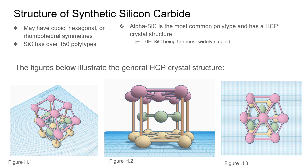Structure of synthetic silicon carbide: synthetic silicon carbide may come in cubic, hexagonal, or rhombohedral symmetries and has over 150 polytypes. Alpha silicon carbide is the most common polytype and it has the hexagonal close-packed (HCP) crystal structure shown in the images below.